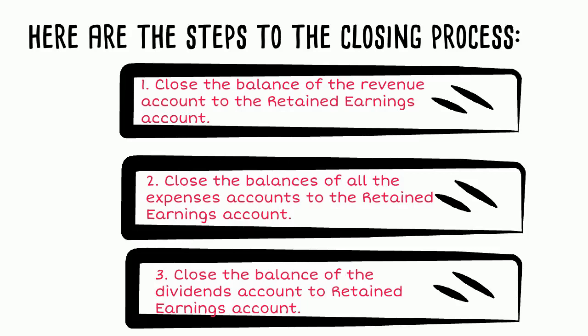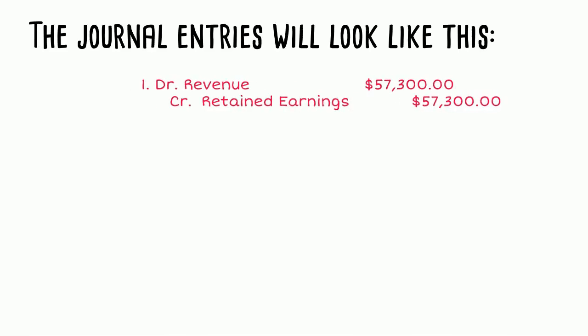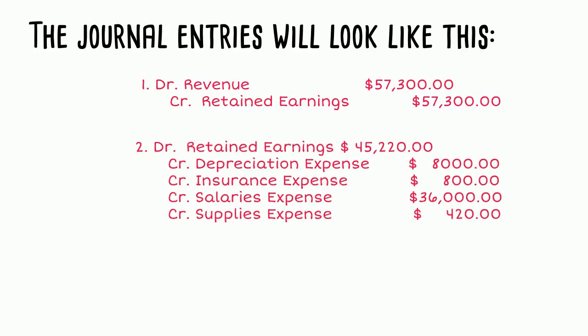Let's take a look at the journal entries. First, we must close the balance of revenue to retained earnings. Revenue will be zeroed out by debiting the account for the balance — $57,300. Your credit will be to retained earnings for the same amount. Remember, debit dollars must equal credit dollars. In the second closing entry, you must debit retained earnings and credit each of the expense accounts used during the period. To get the amount to debit retained earnings, you simply add up all the credits. In this example, when you sum all the credits, they equal $45,220, and this is the amount to debit retained earnings for.